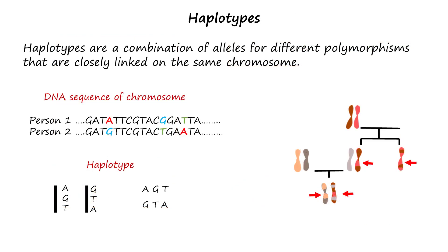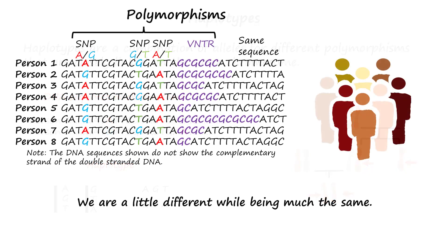Haplotypes are a combination of alleles for different polymorphisms that are closely linked on the same chromosome. Polymorphisms are the variant forms of a specific DNA sequence among individuals, which exist in a mostly similar chromosomal DNA sequence.